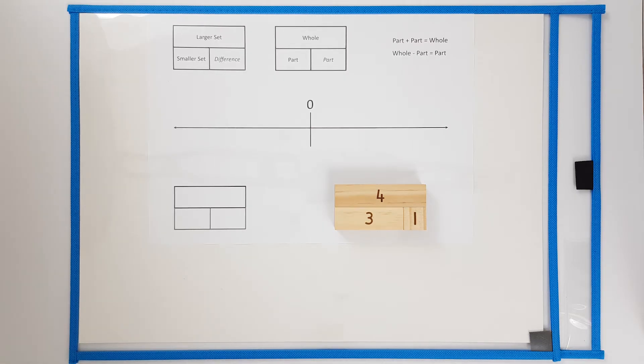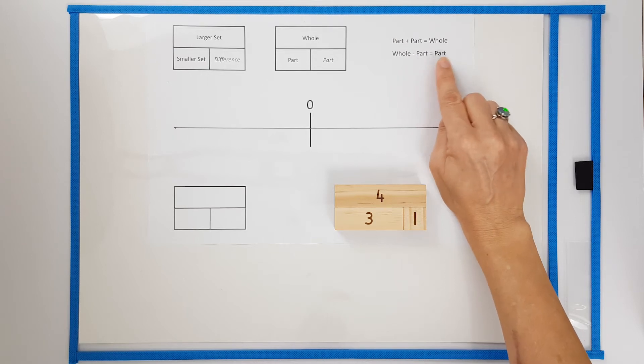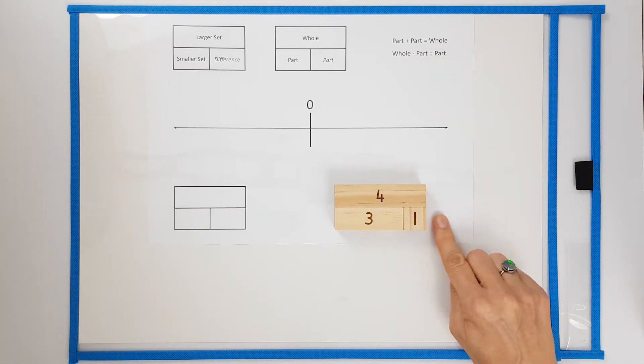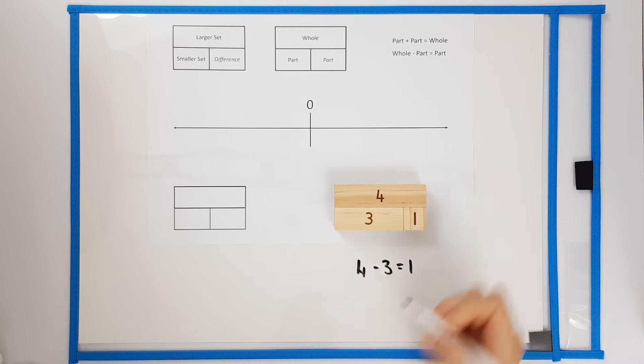Before we begin there are some important maths words we need to discuss. For subtraction we say whole subtract part equals part. So for this part-part-whole diagram we would say the whole of four subtract the part of three equals the part of one.